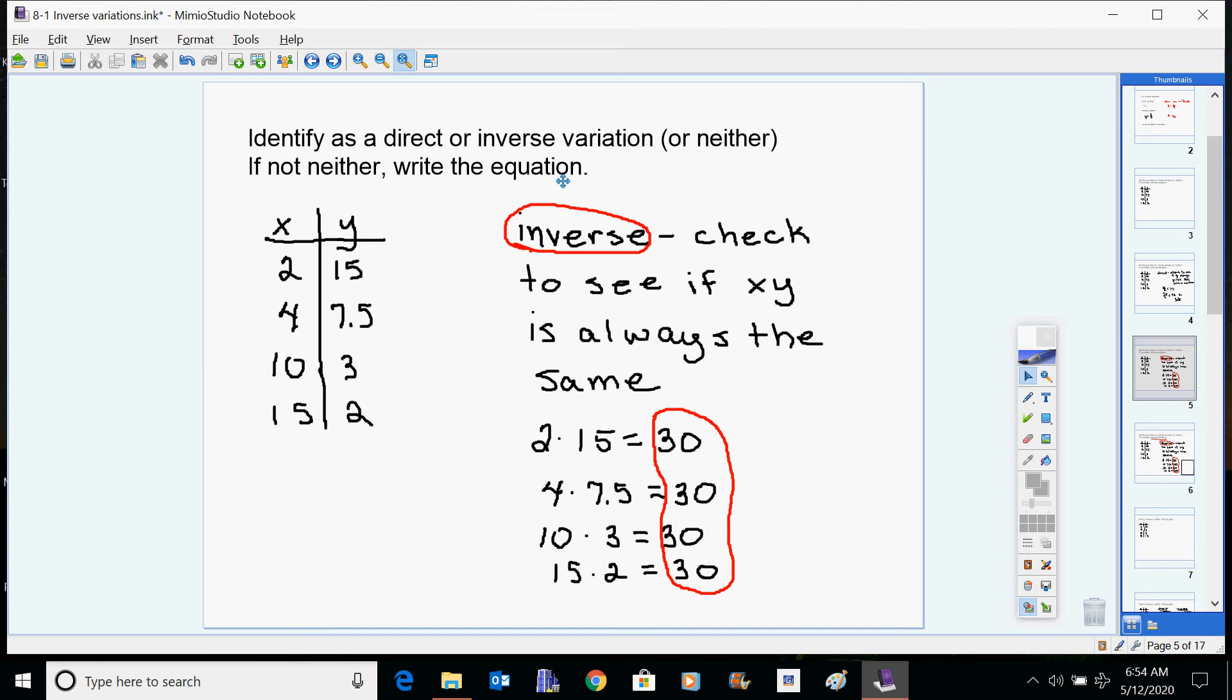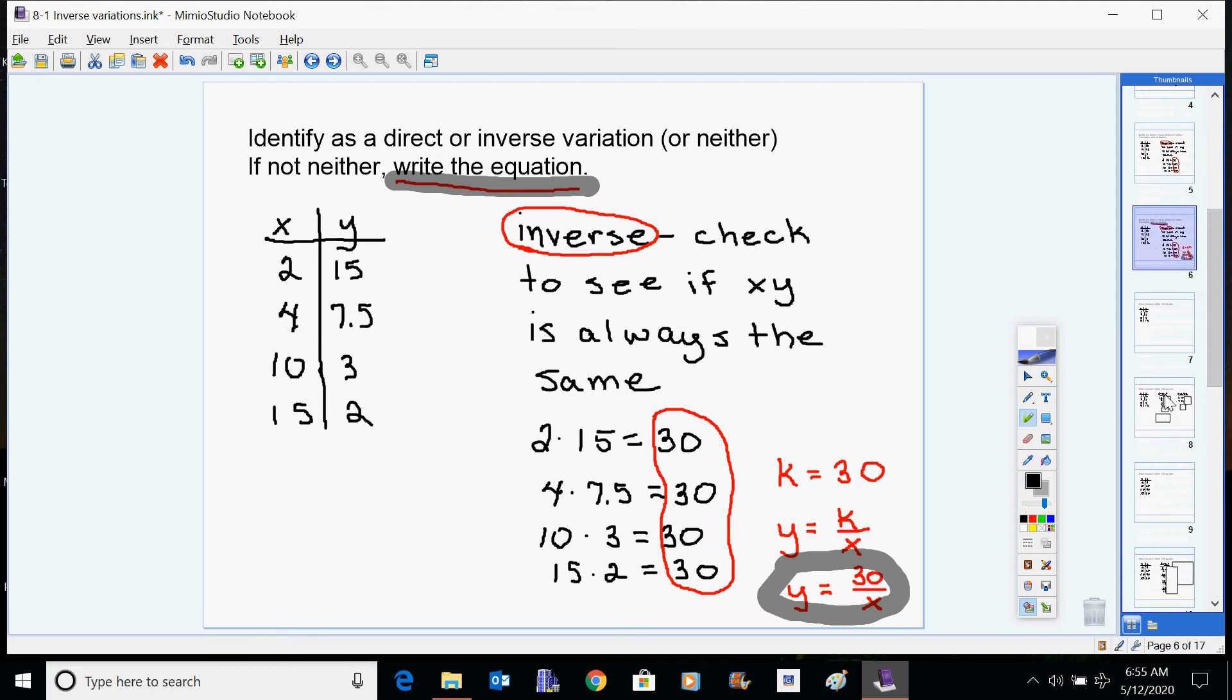Now we have this second part: then write the equation. What we found, when you found that number that's in common, you have found k. And remember, our inverse variation is y equals k over x. So to find the equation, you have to plug 30 in for k. This part right here is the answer to write the equation. So once you found the constant of variation, you take it and you put it into the equation that applies. If it's a direct variation, you use the direct variation equation. If it's the inverse one, you use the inverse one.